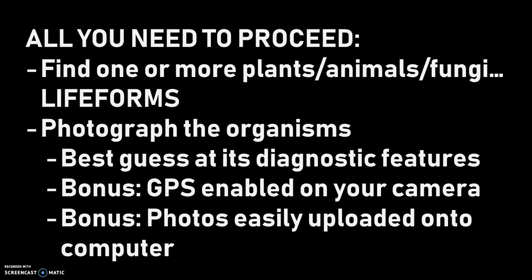At any rate, you need to photograph the organism and make your best guess at what the diagnostic features are — what's going to separate this plant or animal from any other. Look for its markings. For a plant, look at the shape, size, what sort of flowers it might produce, or other products. Things like acorns can be identifying if you're looking at an oak tree. Leaf structure, leaf shape, colors — all that sort of stuff that would distinguish it from other species. Bonus points if you can get your GPS enabled on your phone or camera so pictures are automatically tagged.